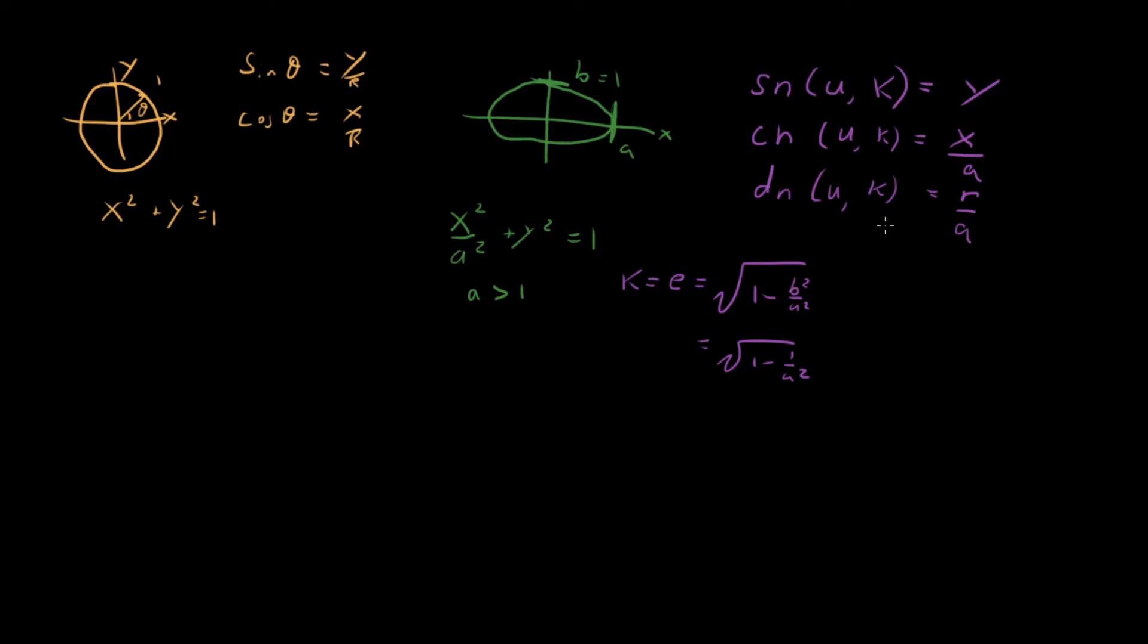So you can see that when we were looking at circular functions, something like dn wouldn't have really made sense, right? Because the radius is constant. We would have had, you know, radius over a would have been 1 over 1. And so that function would not have been very useful or interesting in the case of circular trig. But in the case of elliptical trig, it ends up being very important.